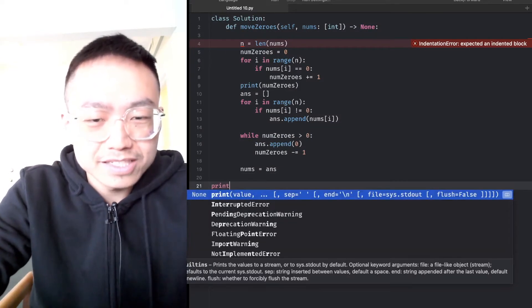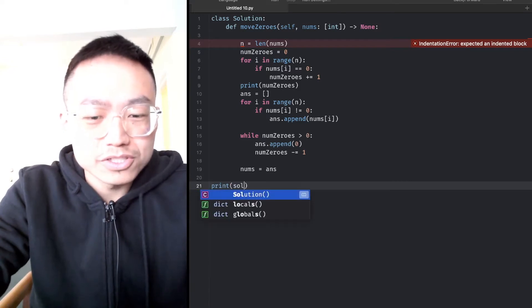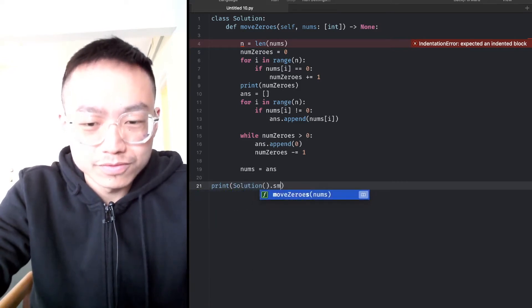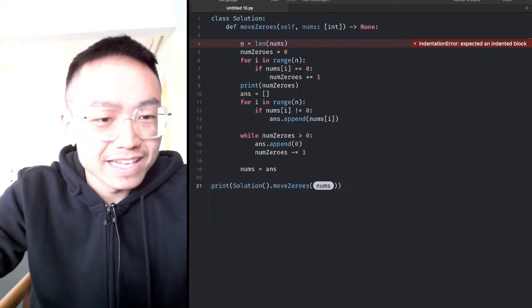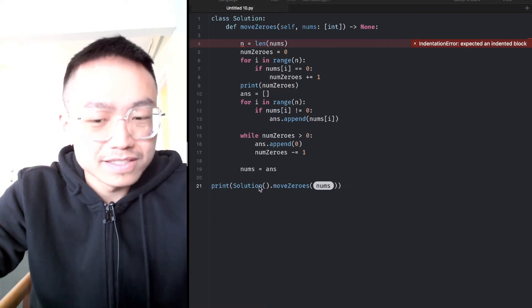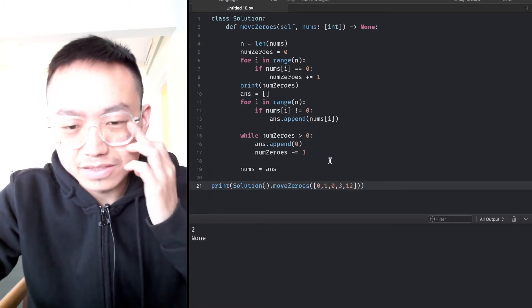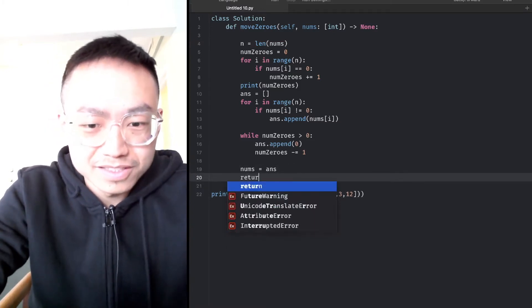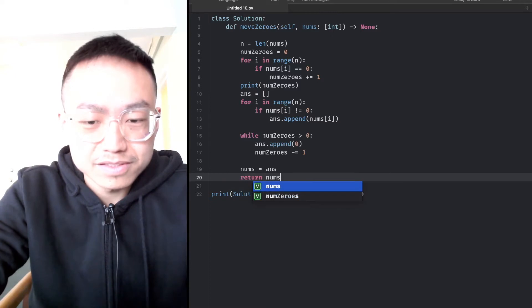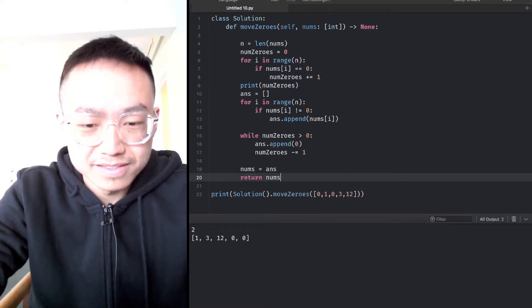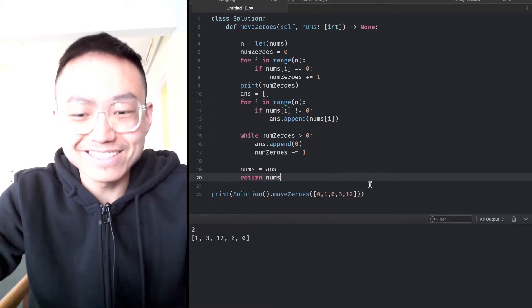We can make a test. Print solution dot move zeros and put the number here. We need to return nums. Yeah, we did it, we did it, we did it!